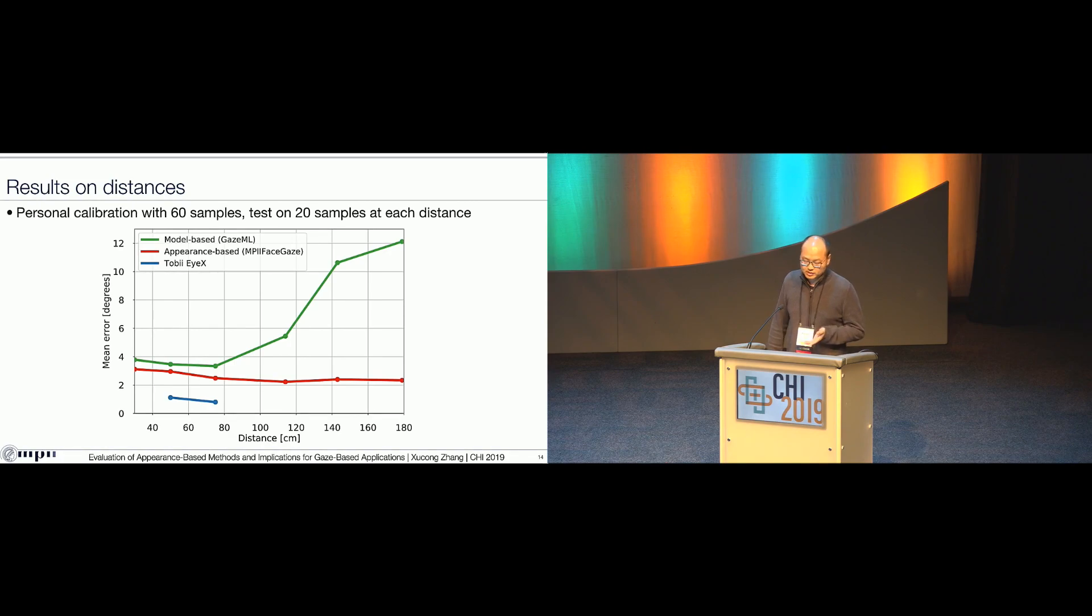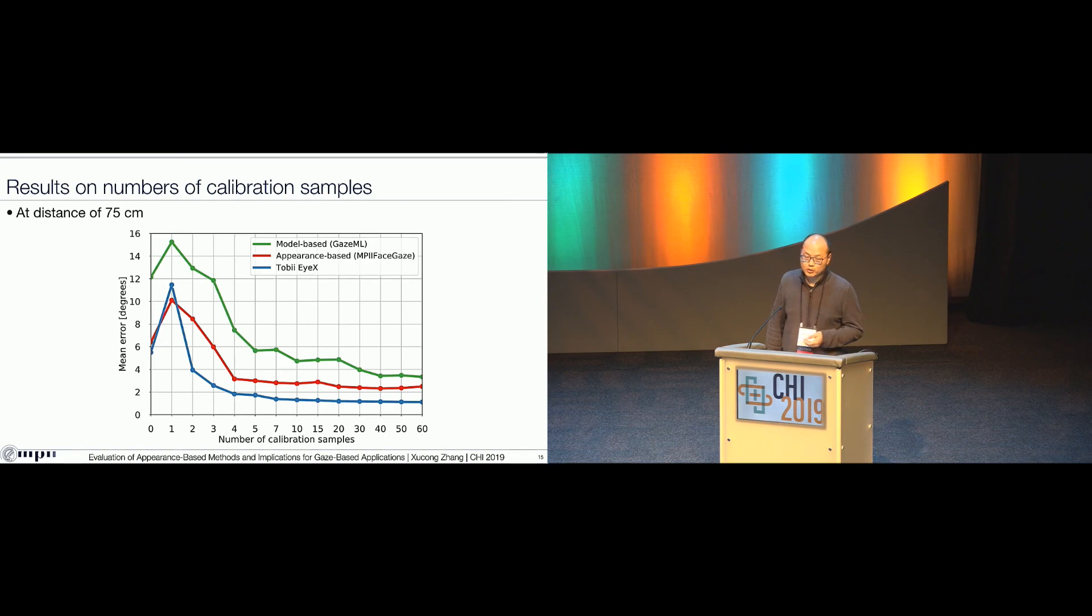Please note that for this experiment, we used 60 samples for personal calibration. In practice, usually you cannot collect so many samples for personal calibration, so our next experiment is about how many samples we need for personal calibration. Here, for this figure, the X-axis is the number of calibration samples we used and the Y-axis still is the gaze estimation error in degrees, the lower the better. And we picked the distance of 75 centimeters because this should be good for the Tobii RX.